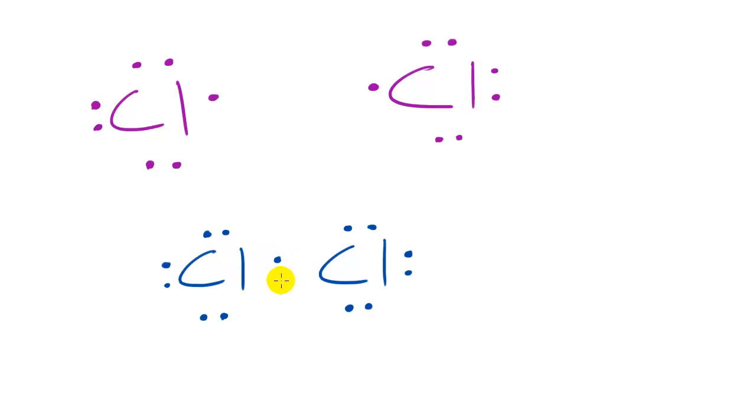One for this one, and the other for this one. So, now you can see each of these chlorine atoms has a full valence energy level. They're both happy. They're both bonded into this covalent bond.